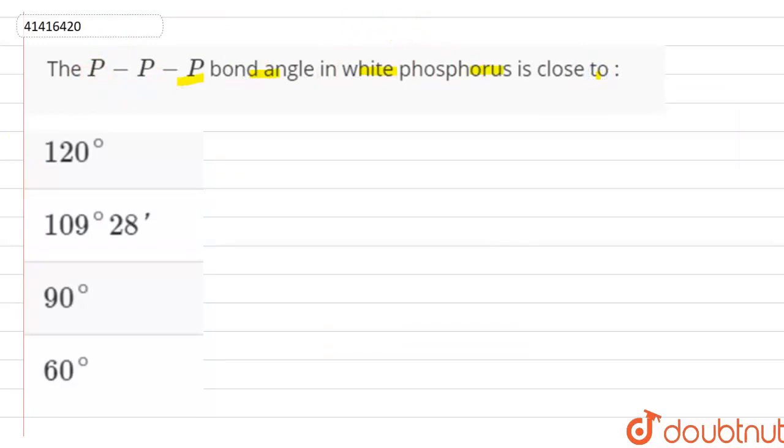So let's first draw this structure. Which one is P-P-P bond? Which one is white phosphorus? And what is the structure of white phosphorus? This is my P4. Let's draw this structure. Okay? What is this? This is P4 structure.